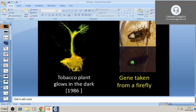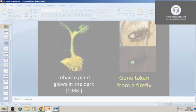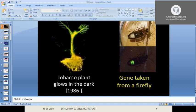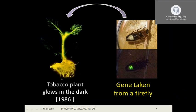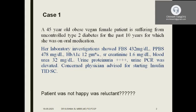Now we are moving to an interesting topic. Can you see this picture? This is a tobacco plant that glows in the dark. It was discovered in 1986. The gene responsible for bioluminescence from fireflies was transferred to the tobacco plant, enabling it to glow in the night. This demonstrates the power of gene transfer technology.